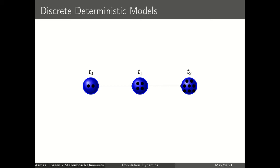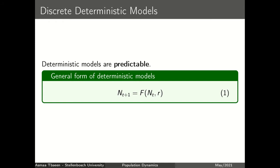For example, you can go ahead and calculate the population size at time three. Equation one shows the form of the deterministic model, where Nt is the population size at time t and r is the per capita growth rate, which is the rate at which the population size changes per individual in the population. The change in population size is mainly defined by the current population size and the growth rate, which is determined by the birth, death, immigration, and emigration rates within the population.